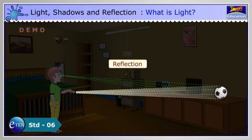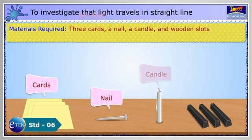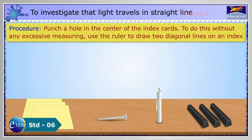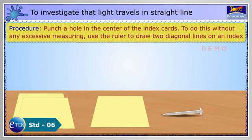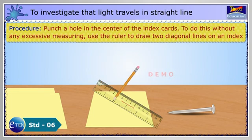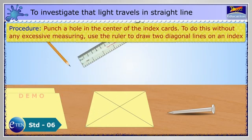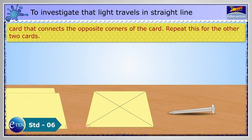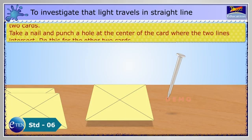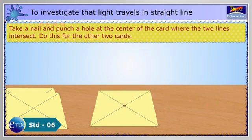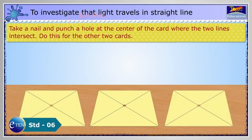3 cards, a nail, a candle and wooden slots. Procedure: Punch a hole in the center of the index cards. To do this without excessive measuring, use the ruler to draw 2 diagonal lines on an index card that connects the opposite corners of the card. Repeat this for the other 2 cards. Take a nail and punch a hole at the center of the card where the 2 lines intersect. Do this for the other 2 cards.